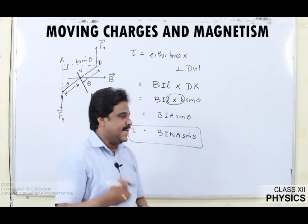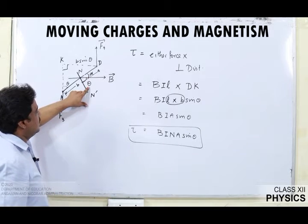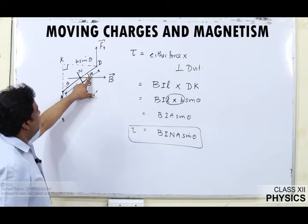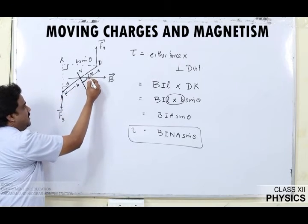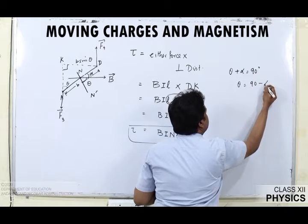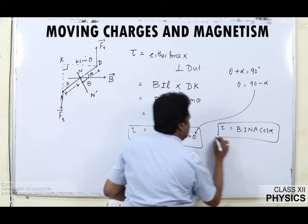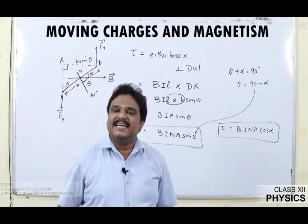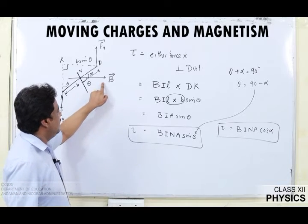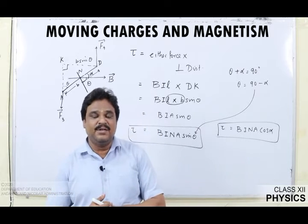I am going to modify this expression in terms of another angle alpha. Let alpha be the angle between the plane of the loop and the magnetic field. Theta is the angle between the normal to the plane and the magnetic field. Geometrically, theta + alpha = 90, so theta = 90 − alpha. Substituting: tau = BINA sin(90 − alpha) = BINA cos alpha. While doing numericals, be careful whether theta or alpha is given in the question.